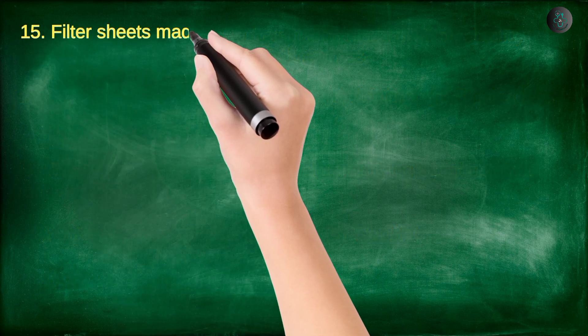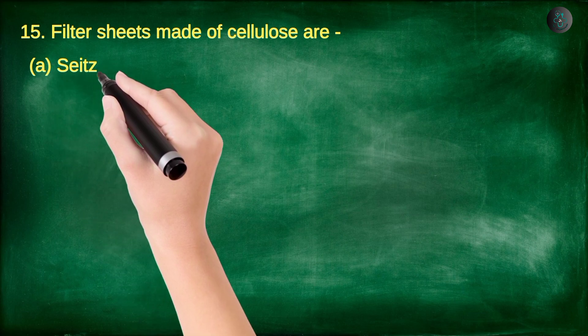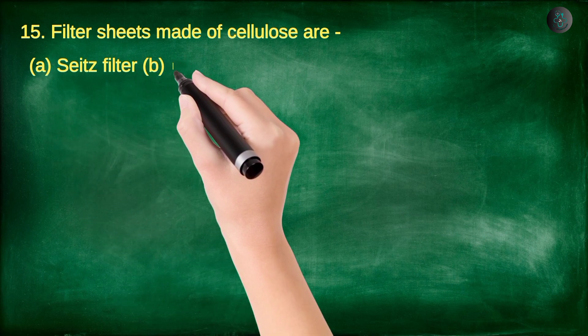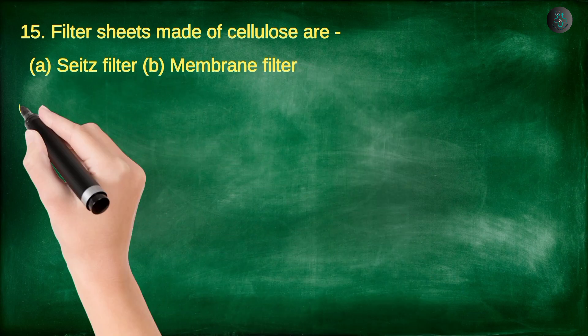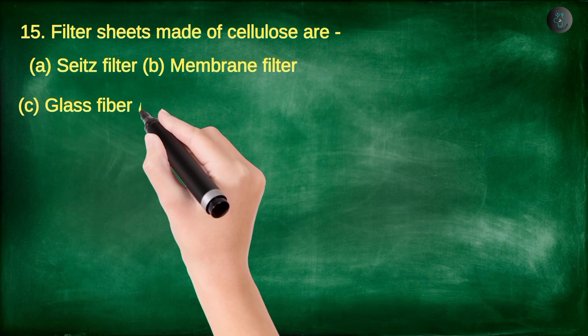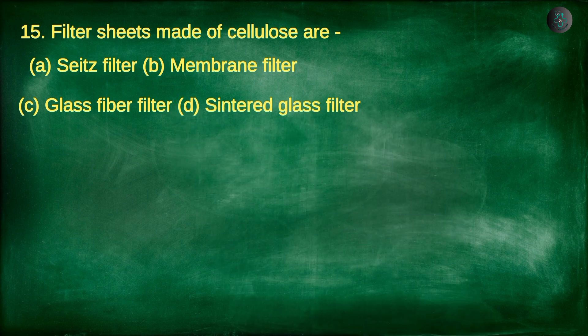Question number 15. Filter sheets made of cellulose are: A. Seitz Filter, B. Membrane Filter, C. Glass Fiber Filter, D. Sintered Glass Filter.